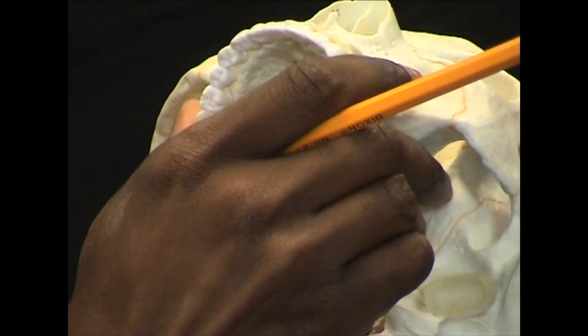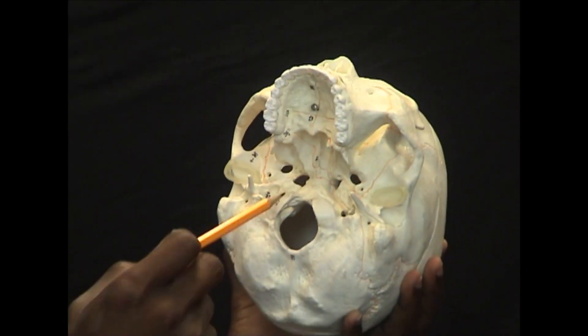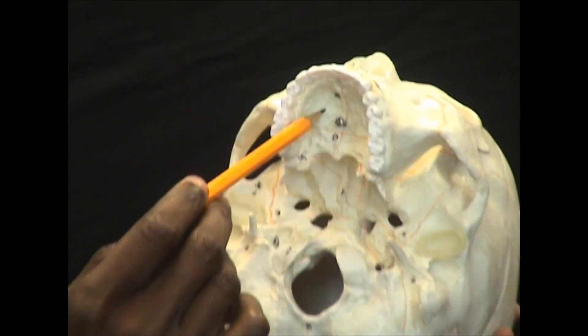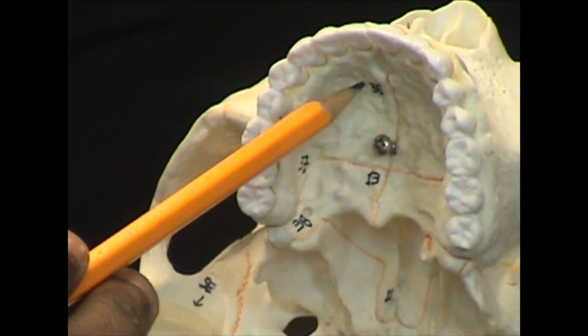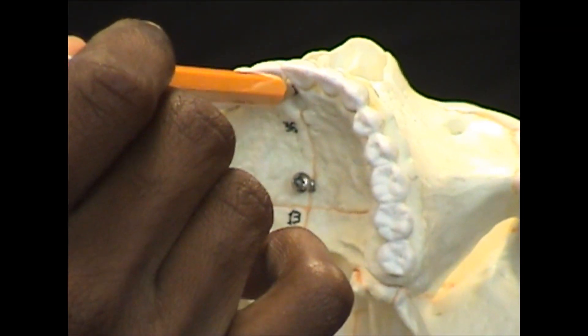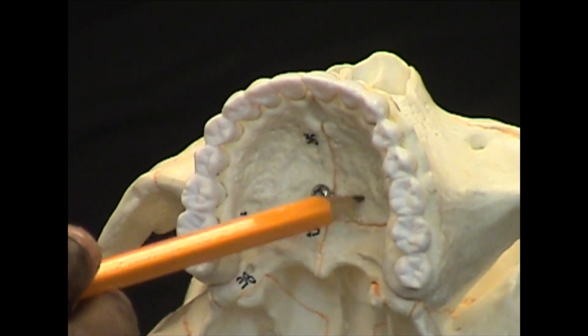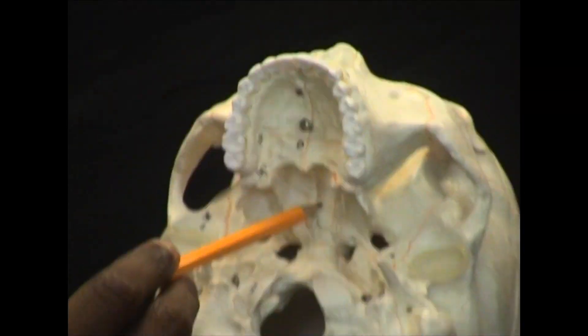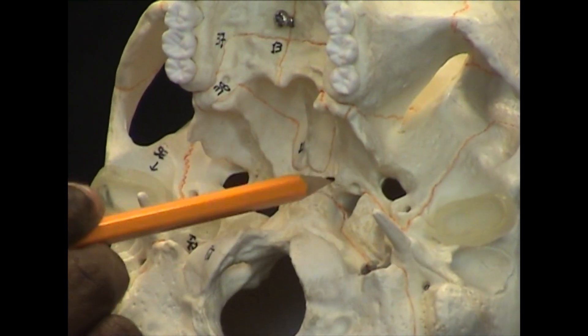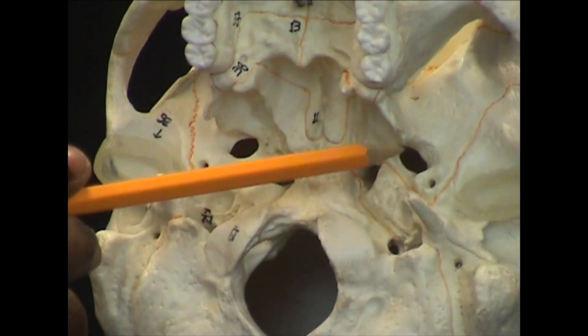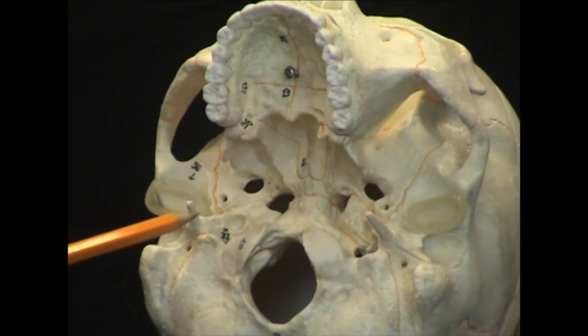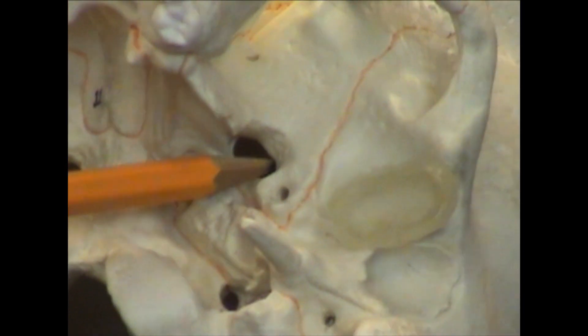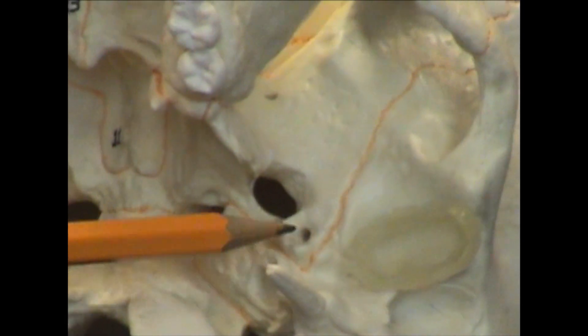Now let's get an inferior view of our skull — quite a few holes down there. The first bone is the maxilla, then the palatine process of the palatine bone. This marking, where my pencil is inserting, is called the incisive fossa. Inferior to the maxillary process of the palatine bone is the hard palate — the palatine bone. Moving down, we have the vomer once again. Surrounding the vomer and the sphenoid bone are holes. The first one is the foramen ovale, then the foramen spinosum, and the foramen lacerum. This is the carotid canal.